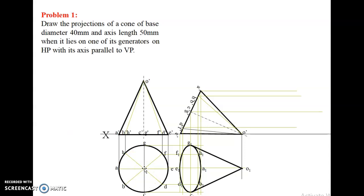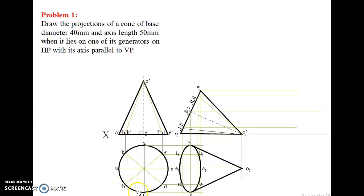Keep your protractor and mark 45 degrees, then draw a line. Likewise, divide the circle into eight equal parts and name the parts as A, B, C, D, E, F, G, and H. Totally we have eight parts.